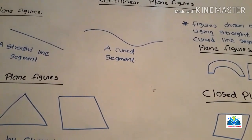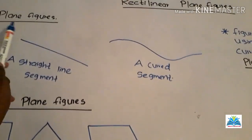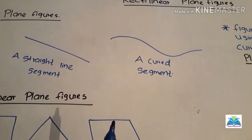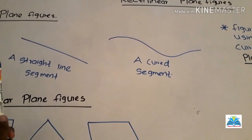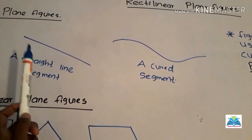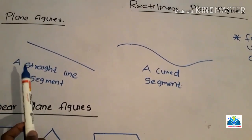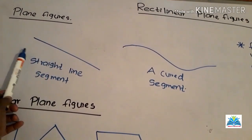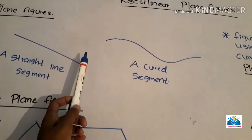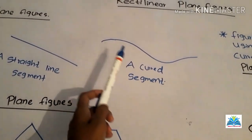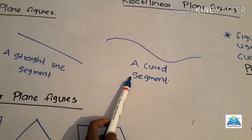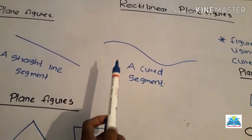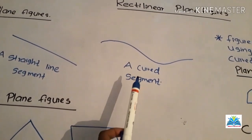First, what are plane figures? Before you learn about plane figures, you should have an idea about line segments. There are two types of line segments: one is a straight line segment, and the other is a curved line segment.